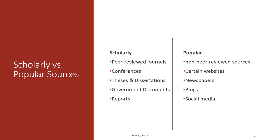When distinguishing between scholarly and popular sources, there are several differences to consider. Scholarly sources are often peer reviewed, meaning articles or other mediums undergo evaluation by experts in the field to ensure they fit within the existing literature. Other examples such as conferences, theses and dissertations, government documents and reports may not undergo peer review in the same manner.